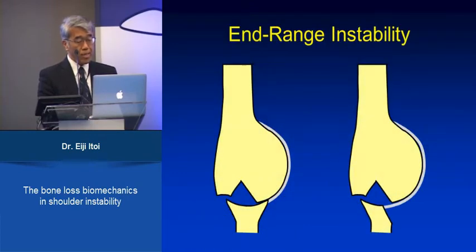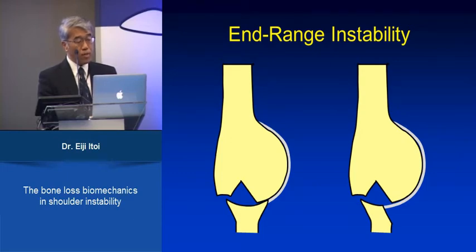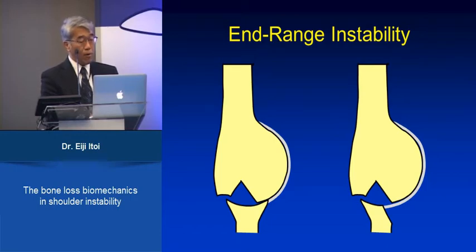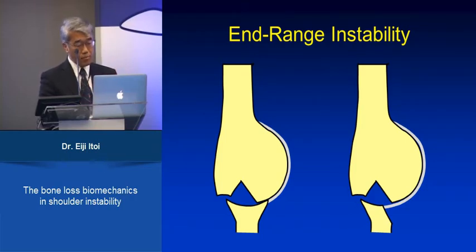What about the Hill-Sax lesion? It's a little more complicated because it's not the pure size of the Hill-Sax lesion that matters, but the relative size of the Hill-Sax lesion to the glenoid — that is the most important thing. This Hill-Sax lesion on the left is totally covered by the glenoid, so it causes no instability. However, the same Hill-Sax lesion causes instability if there is a bony defect of the glenoid. So we have to look at both lesions at the same time.